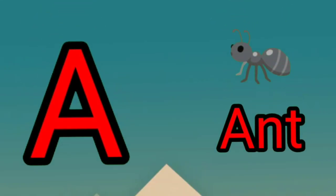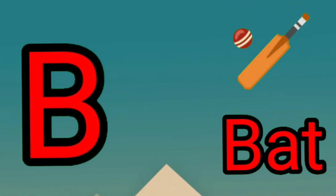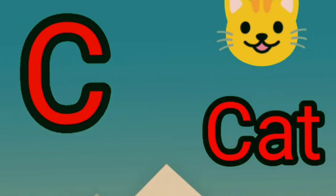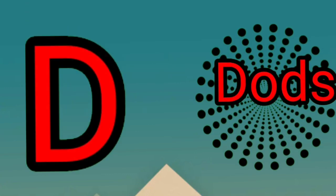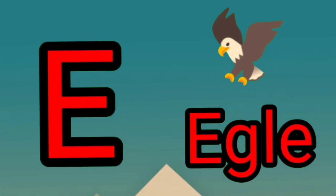A. A for Ant. B for Bed. C for Cat. D for Doors. E for Eagle.